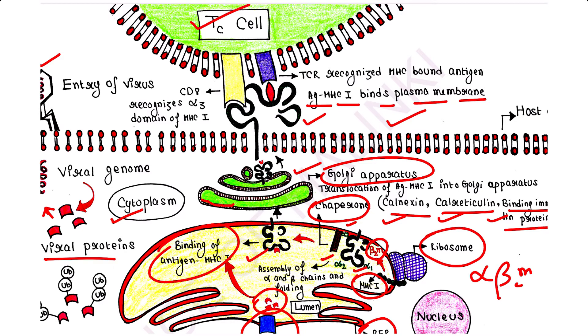Tc cell possesses T cell receptor (TCR) and also has co-receptor CD8 on its surface. TCR recognizes MHC-bound antigen, whereas the co-receptor CD8 recognizes the alpha 3 domain of MHC class 1 molecule.